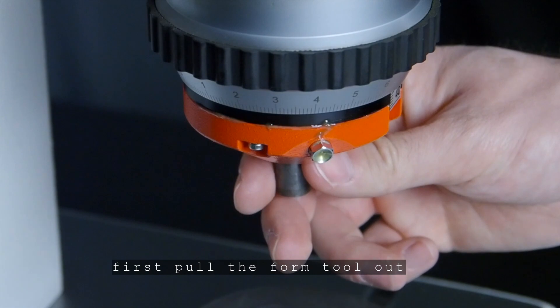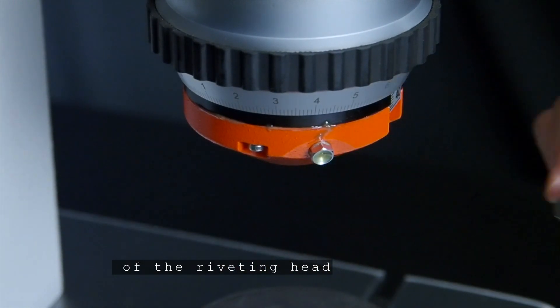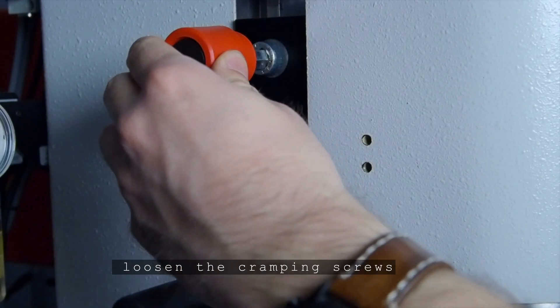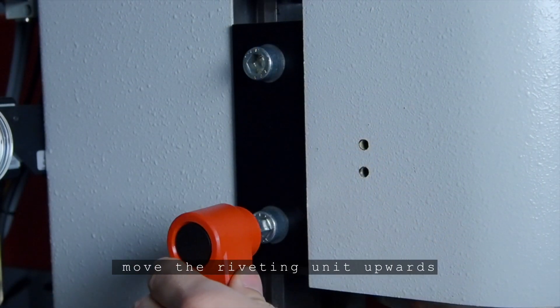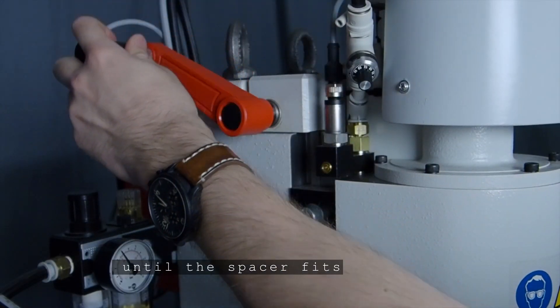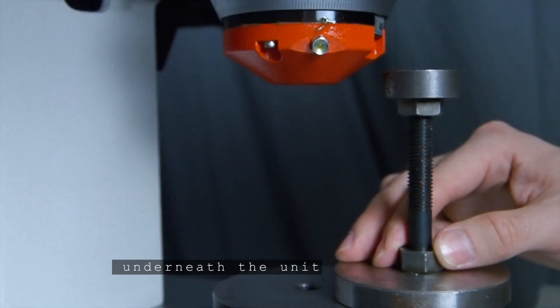First pull the form tool out of the riveting head. Then loosen the clamping screws of the riveting unit on the column and move the riveting unit upwards until the spacer fits underneath the unit.